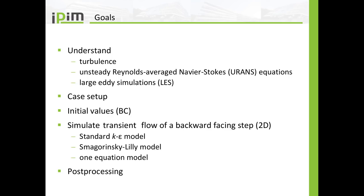The goals of this tutorial are the following: I want you to understand turbulence, or at least have a slight grasp on turbulence, and I want you to understand the difference between Reynolds-averaged Navier-Stokes equations and large eddy simulations. I am going to run three transient simulations of a backward-facing step, which is a two-dimensional simulation, using three models: the standard k-epsilon model, which is a Reynolds-averaged model, and the Smagorinsky-Lily model and a one-equation model, which are large eddy models.